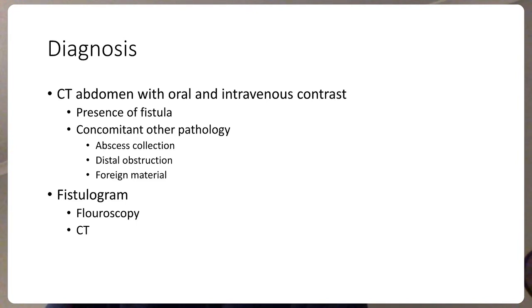Another investigation we need to perform is a fistulogram. The fistulogram helps confirm the connection between the skin and the small intestine, and can also measure how far down the length of the small intestine the fistula is located. There are two types of fistulograms: one is fluoroscopy and the other is a CT scan. CT scan-based fistulogram is more available and more commonly used these days.